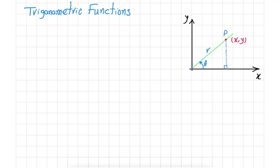Sine of theta is the length of the opposite side, which is this one. The length of this side is Y over the hypotenuse.